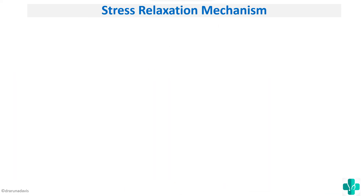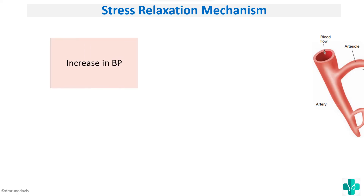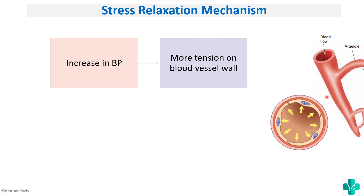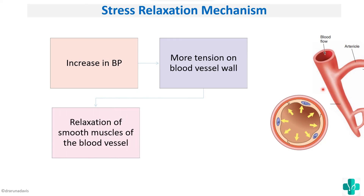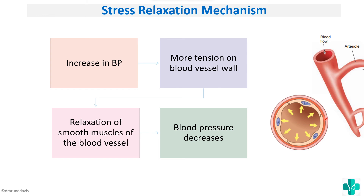For the stress relaxation mechanism: when there is an increase in blood pressure, tension on the walls of the blood vessels increases. Because the vessel walls are smooth muscle, increased tension causes relaxation of those smooth muscles, thereby decreasing blood pressure. This response — where increased wall tension leads to smooth muscle relaxation and BP decrease — is called the stress relaxation mechanism.